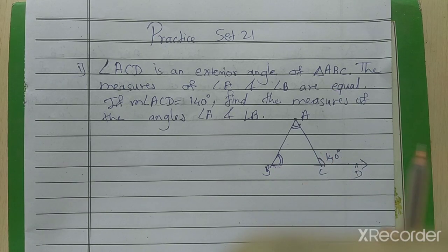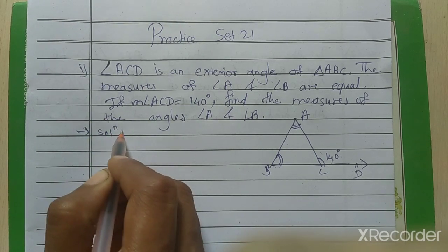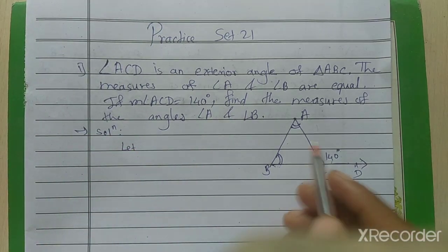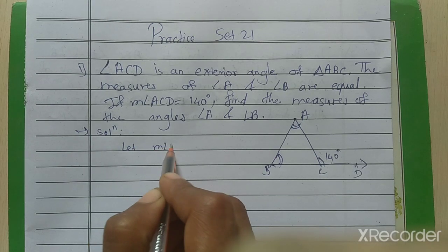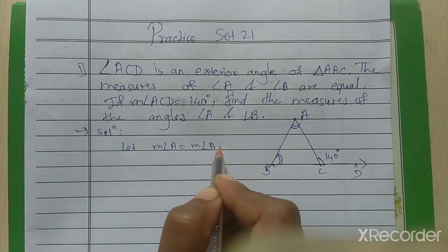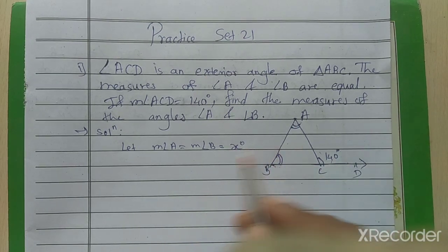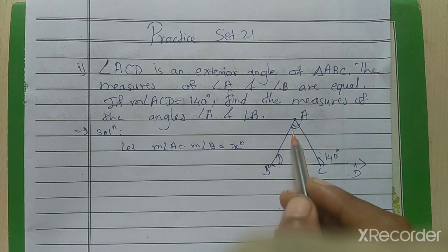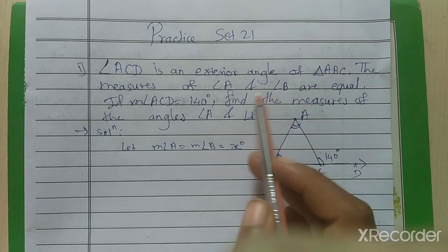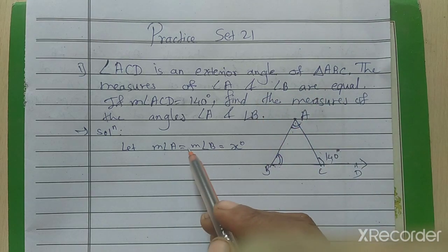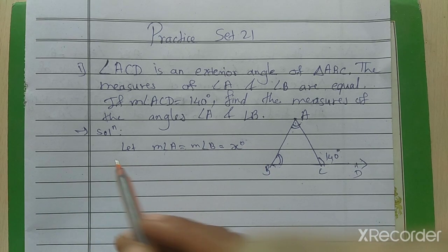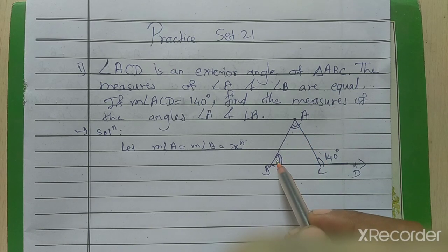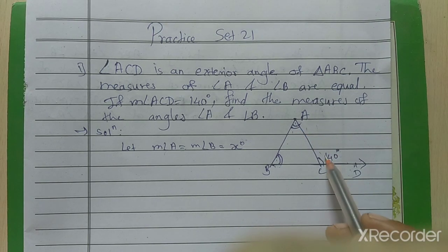First, we have to write the given things. Since angle A and angle B are equal but their measurement is not given, I consider measure of angle A equals to measure of angle B equals to X degrees. Also given: angle ACD equals 140 degrees. We learned remote interior angles in the previous video.